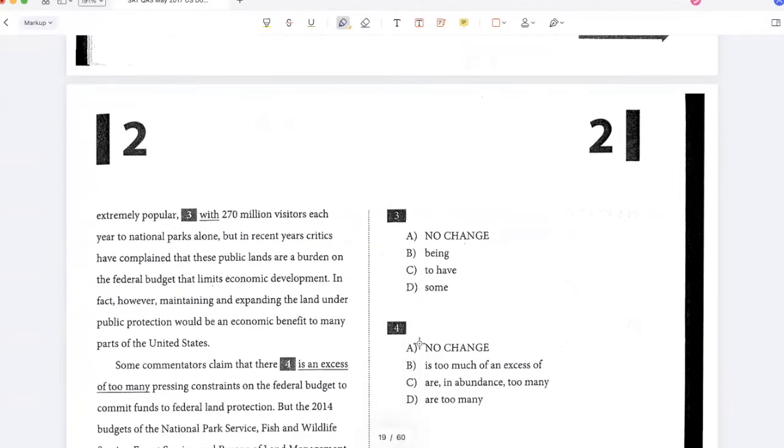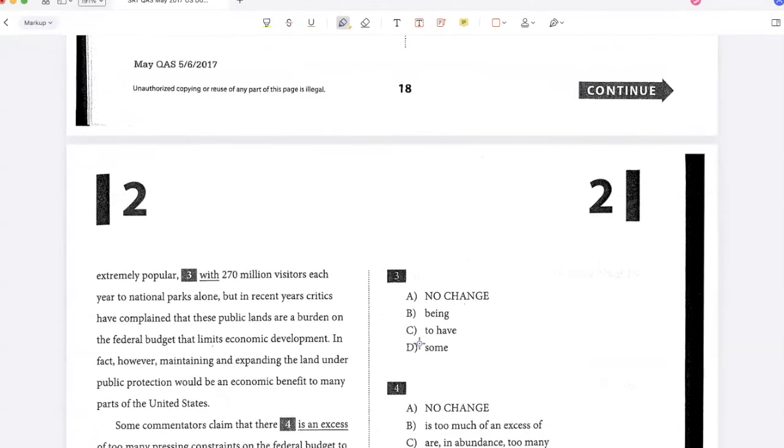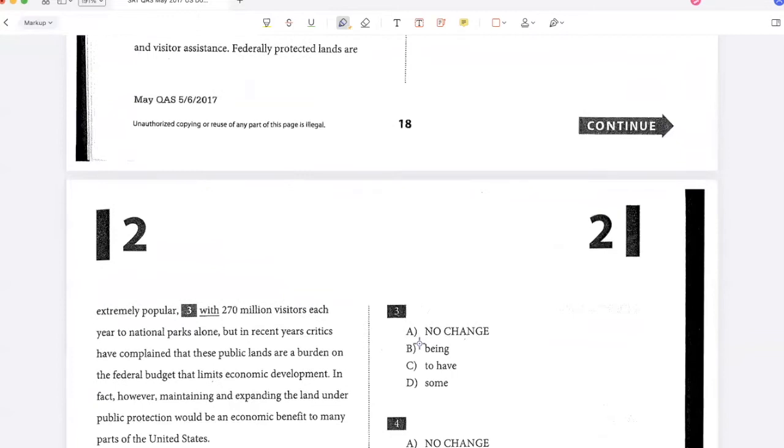Federally protected lands are extremely popular, with 270 million visitors each year to national parks alone. But in recent years, critics have complained that these public lands are a burden on the federal budget that limits economic development. In fact, however, maintaining and expanding the land under public protection would be an economic benefit to many parts of the U.S. Here I have to choose the correct preposition. Federally protected lands are extremely popular with 270 million visitors each year. So the way it's written seems fine. So I'm going to keep this. Being 270 million visitors each year, that is not the right construction. To have 270 million visitors is also incomplete. And some 270 million visitors years is also incomplete. So the best answer is option A.